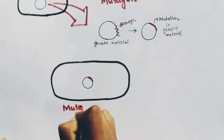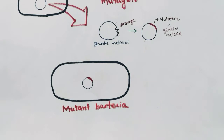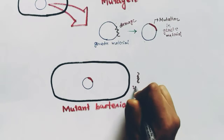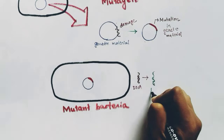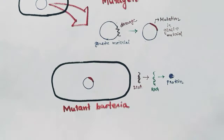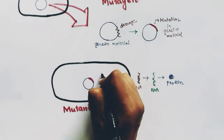Now, this bacteria is the mutant bacteria. Why is this so important? Because the DNA — that is the genetic material — gives rise to RNA, and the RNA gives rise to protein. Protein is the structural compound formed by the direction of the DNA. So if the genetic material is altered, the protein will also be altered.